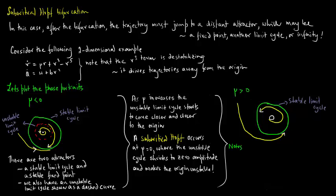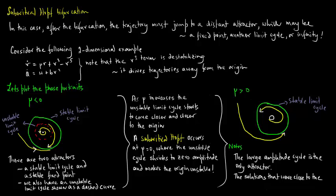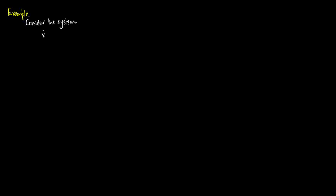After the subcritical Hopf bifurcation, the large amplitude limit cycle is the only attractor in the system. The solutions that were close to the origin are now forced to grow into large amplitude oscillations. As an example, consider the system: x dot equals mu x minus y plus x y squared, and y dot equals x plus mu y plus y cubed. Show that a Hopf bifurcation occurs at the origin as mu varies.